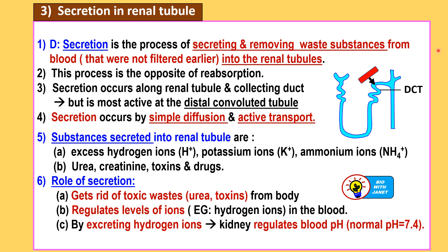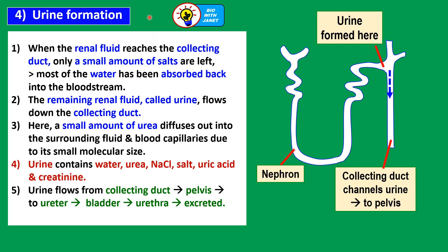Here are the notes for secretion. Substances secreted into the renal tubule from the blood include excess hydrogen ions, potassium ions, ammonium ions, urea, creatinine, toxins, and drugs. The role of secretion is to get rid of toxic wastes like urea and toxins from the body, and to regulate the levels of ions such as hydrogen ions in the blood. By excreting hydrogen ions, the kidney helps to regulate the blood pH at its normal level.